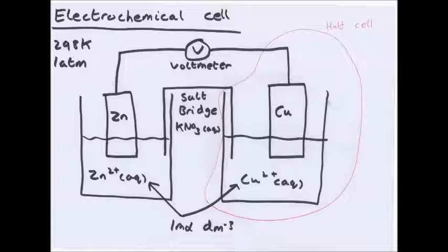So we have zinc metal and a solution of zinc ions, copper metal and a solution of copper ions. And looking at this, I've probably drawn it the wrong way around, it should be the other way, but it doesn't matter, we'll see why it's important later.